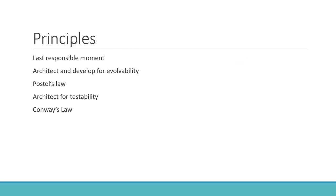Now that we've covered key terms — evolvability and evolving architecture — let's look at the principles that govern this. There are five principles: Last Responsible Moment, Architect and Develop for Evolvability, Postel's Law, Architect for Testability, and Conway's Law. We will look at each briefly to understand how to apply them to make our architecture evolvable.